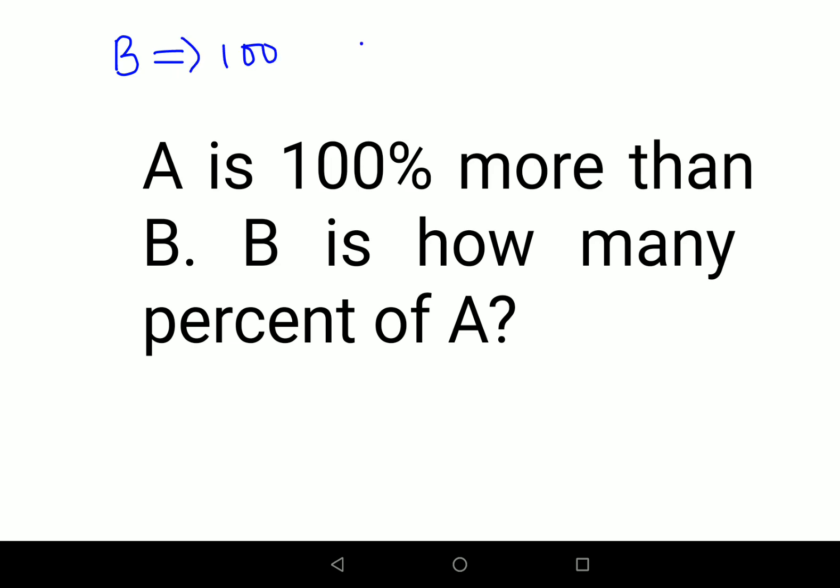So now, therefore A will be what? A is B plus 100%, means 100 upon 100 of B. This comes out to be 2 times B. Therefore A is nothing but 200.